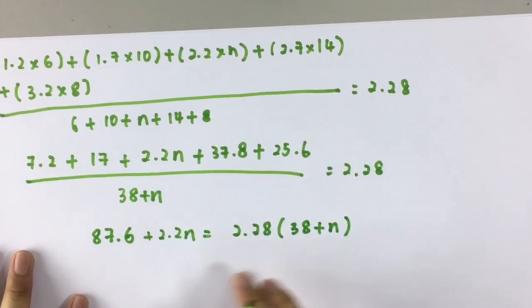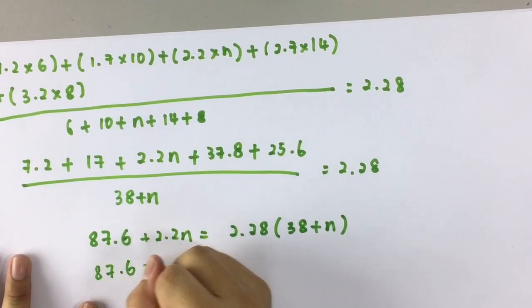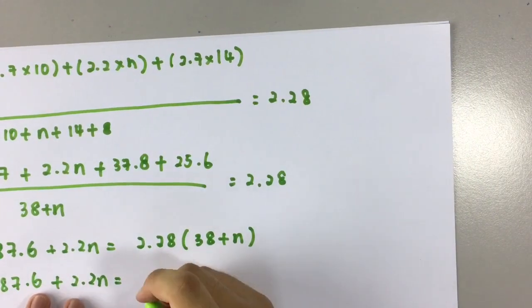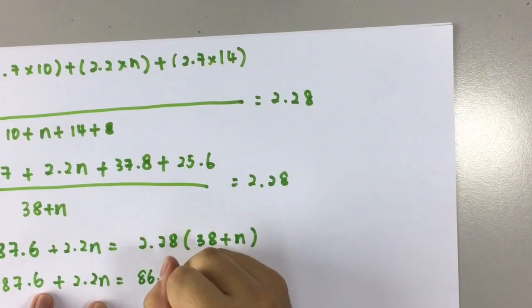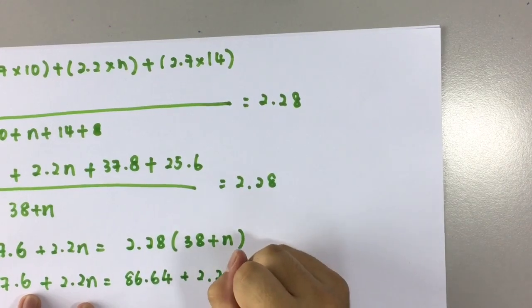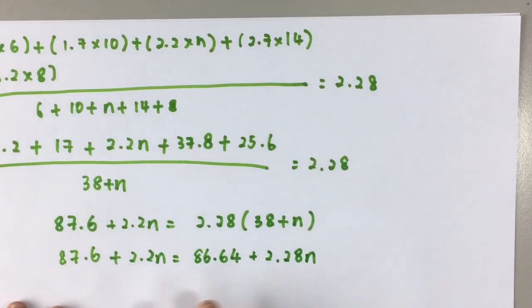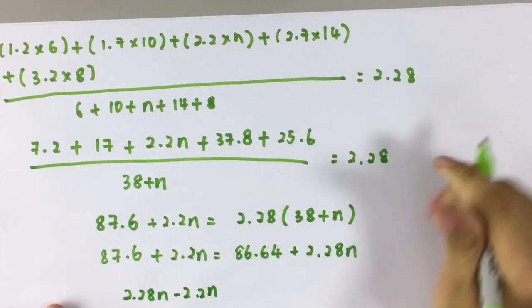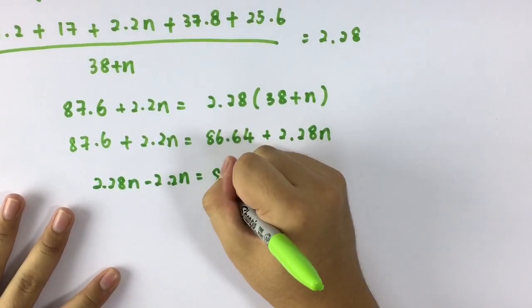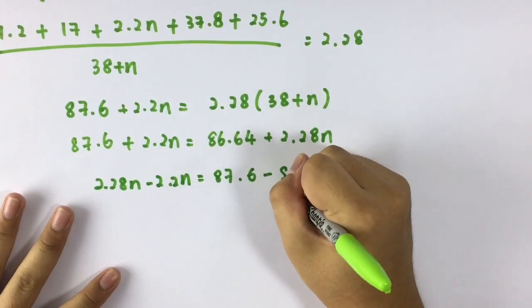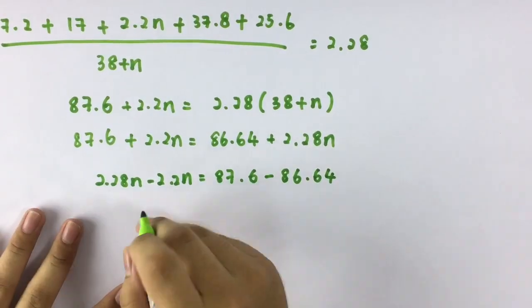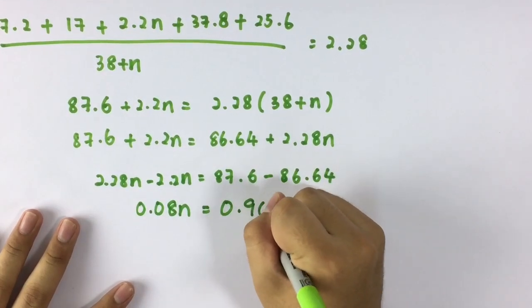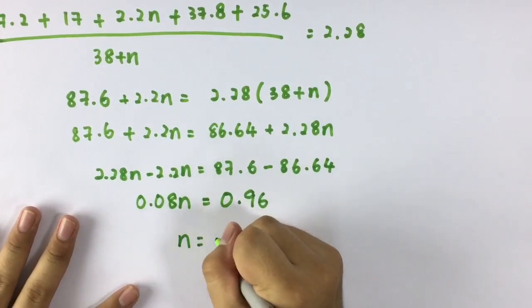Expand. 2.8 times 38 equals to 86.64 plus 2.8n. So move it around. 2.8n minus 2.2n equals to 87.6 minus 86.64. So this is 0.08n equals to 0.96. So n equals to 12.